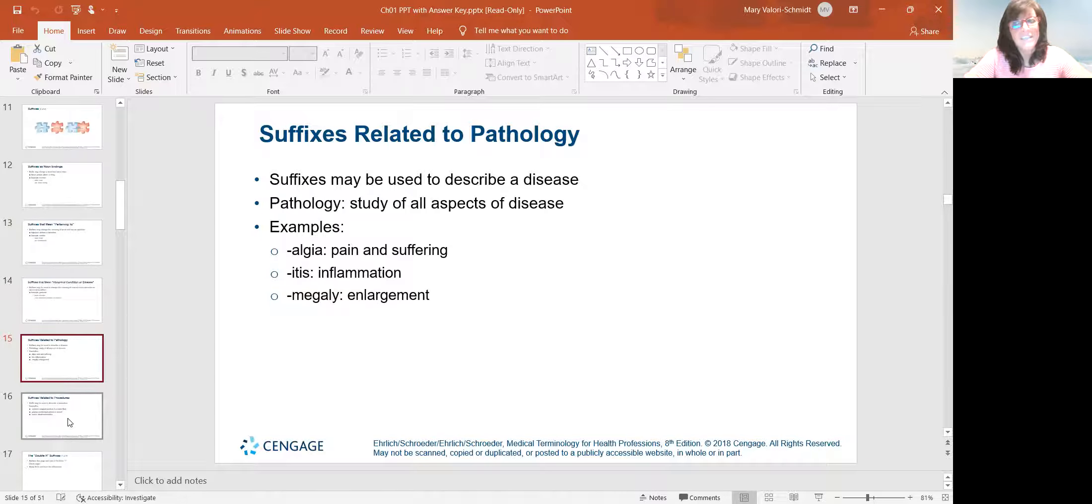The suffixes can also relate to the pathology. Suffixes like algia, which means pain, suffering, itis, inflammation, megaly, enlargement. So if I say neuralgia, I'm talking about nerve pain. If I say pericarditis, I'm talking about inflammation of the pericardium. If I say cardiomegaly, that's an enlarged heart. So those suffixes help to describe what the disease process is.